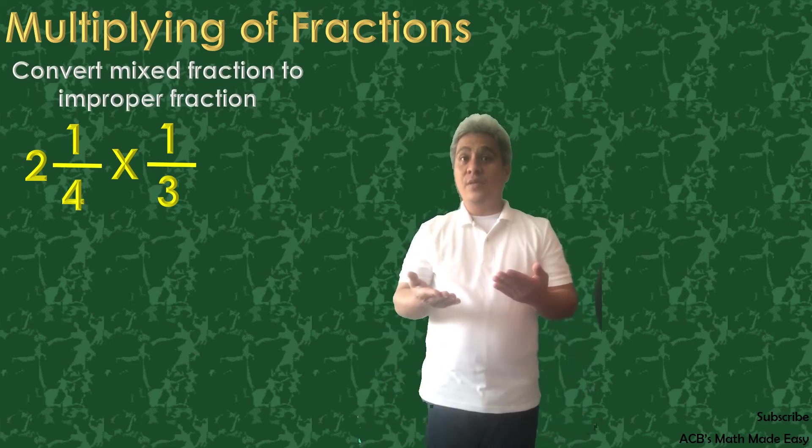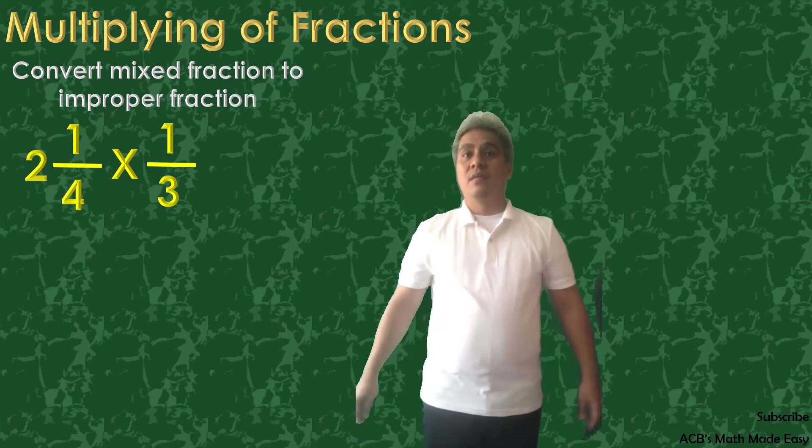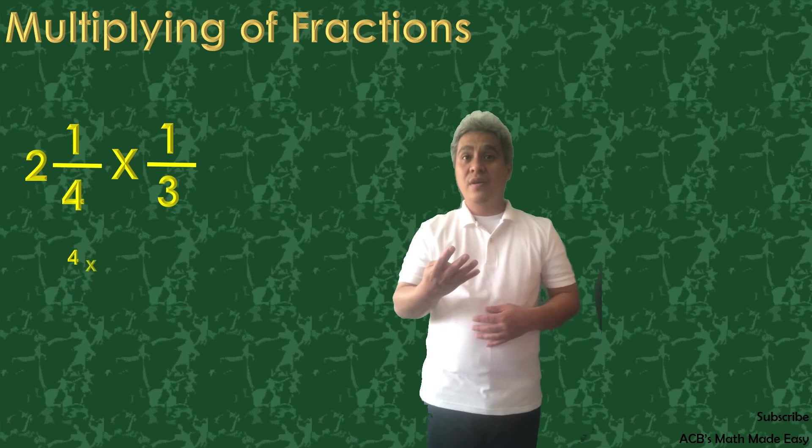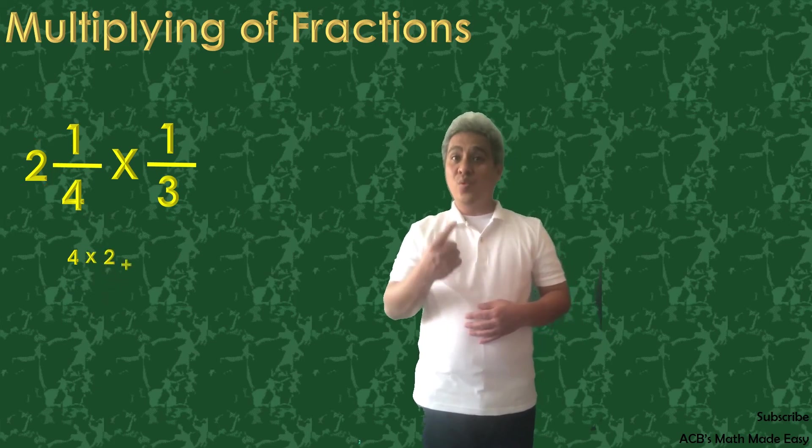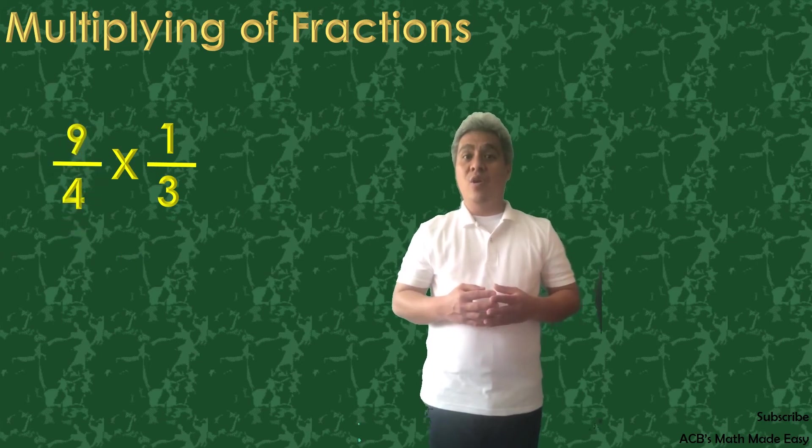First step is to convert mixed fraction to improper fraction. 4 times 2 plus 1 equals 9. It will become 9 over 4.